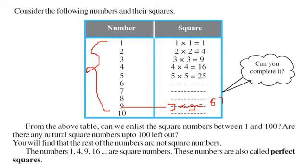So are there any natural numbers in this which are left out? Yes. Because 9 into 9 is 81, 10 into 10 is 100. And as I just said, are there square numbers up to 100 left out in this?